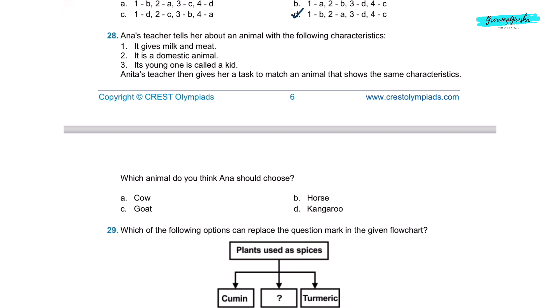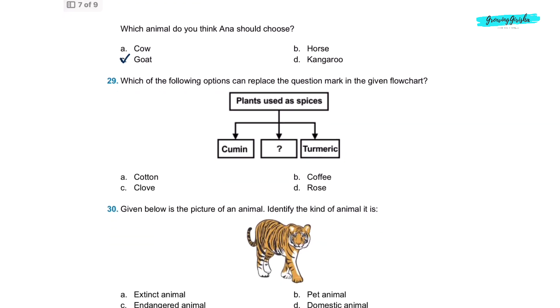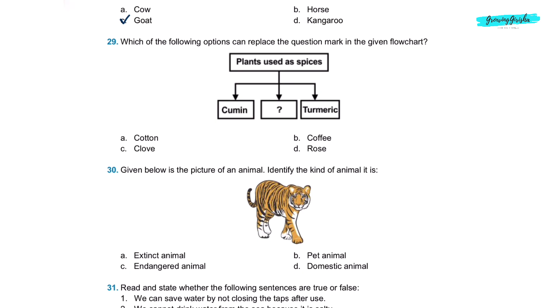Question 28. Anna's teacher tells her about an animal with the following characteristics. It gives milk and meat. It is a domestic animal. Its young one is called a kid. Anita's teacher then gives her a task to match an animal that shows the same characteristics. Which animal do you think Anna should choose? Option C, goat. Question 29. Which of the following options can replace the question mark in the given flowchart? Option C, clover.